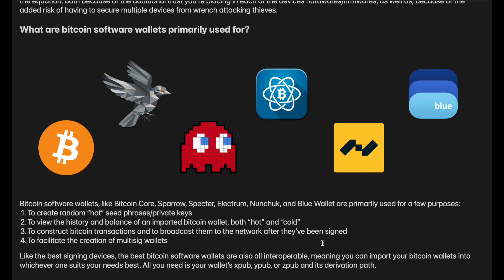The third thing is to be able to construct Bitcoin transactions and then broadcast them to the network after they've been signed. The fourth, but not least, is to facilitate the creation of multi-sig wallets. Just like the best signing devices, the best Bitcoin software wallets are also interoperable, meaning you can import your Bitcoin wallets into whichever one suits your needs best. All you need to import your Bitcoin wallet is your XPub and your derivation path, and with those two pieces of information the software wallet can query the blockchain and find all histories and balances associated with that wallet.